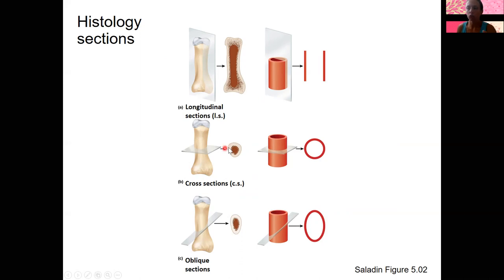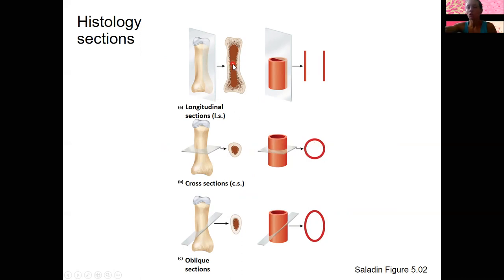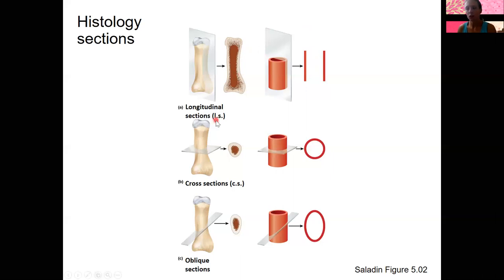A cross-section is still across the long axis of that bone, just like it is of your body, so a cross-section of a bone is going to look like a circle. A longitudinal section is more similar to either a sagittal or a frontal section — it doesn't really matter for a bone because it's the same. You'll see 'LS' on the slides we use to label these longitudinal sections.